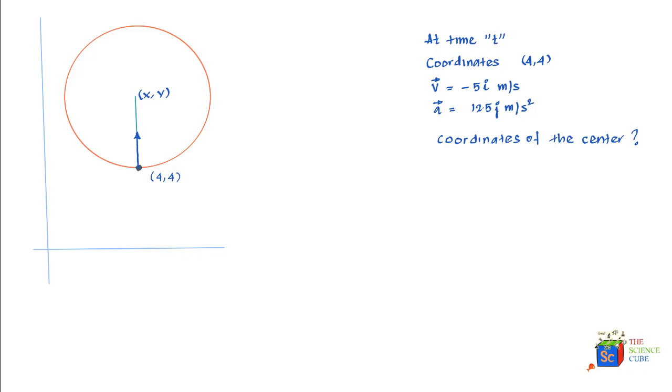Now to find the y-value of the center, what we'll do is make use of the fact that the magnitude of centripetal acceleration a is given as velocity squared at that point of time upon the radius of movement.